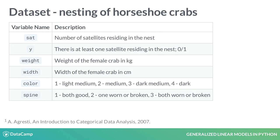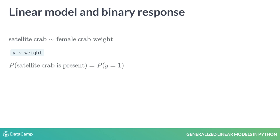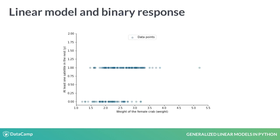To illustrate this, let's consider data from nesting horseshoe crabs. The data has four explanatory variables and response variables sat and y. We are interested in predicting the probability that there is at least one satellite crab nearby the female crab given the female's weight. The response variable is binary, denoting yes or one if the satellite is present, and no or zero otherwise.